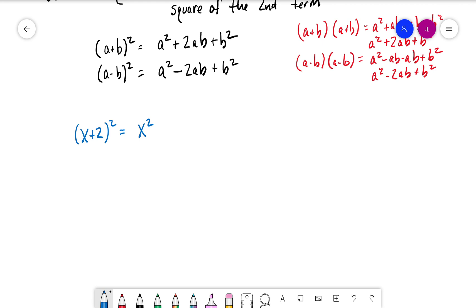We have x and 2. The product of those is 2x, doubled is 4x. So we'd have x² + 4x, and then the last term, 2 squared, is 4. So x² + 4x + 4.